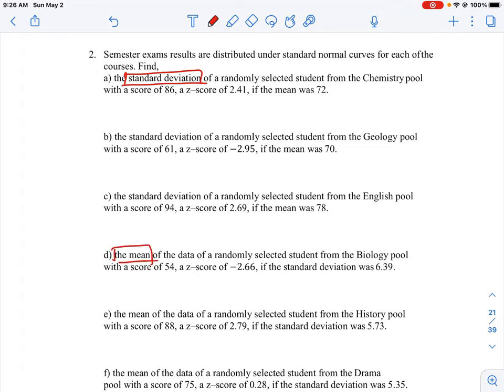So if we look at our original equation for calculating z-scores, we have z-scores equal to the data point minus the mean all over sigma. So we can think of this as like an algebra equation where we're trying to figure out what are our unknowns and what we need to solve for.